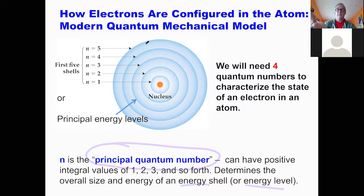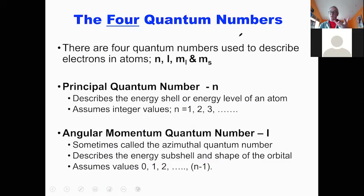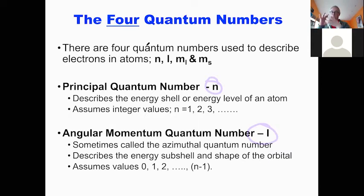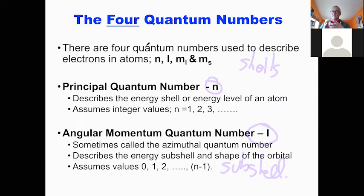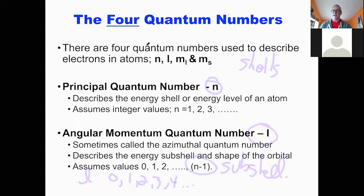The other quantum numbers give you more information about where the electron is. The second one tells you the shape of the subshell — we have shells and then subshells, which are the different shapes electrons can travel in inside the shells. That is L, the angular momentum number. L can start at zero and go up to N minus one.